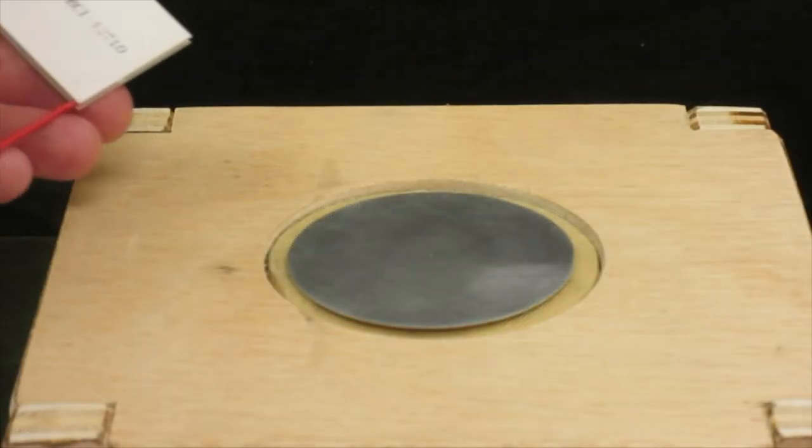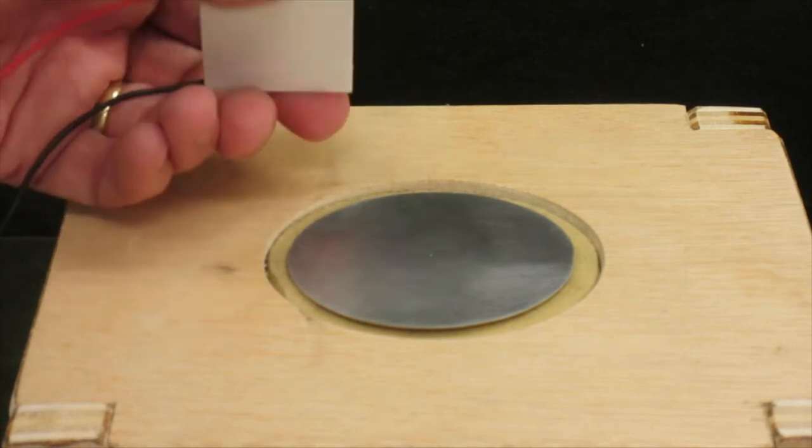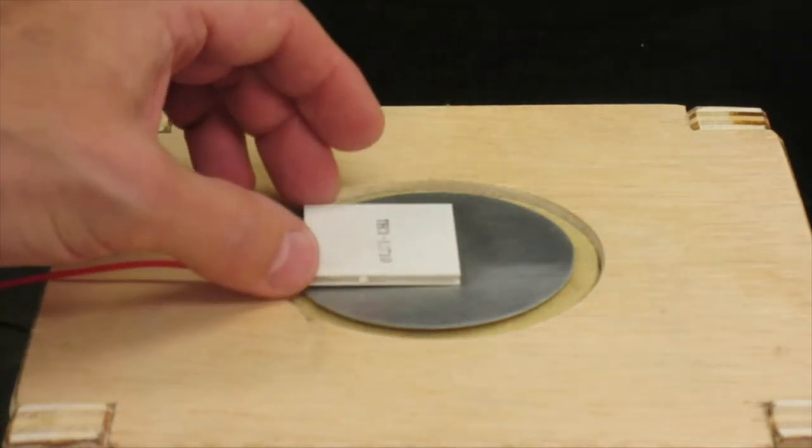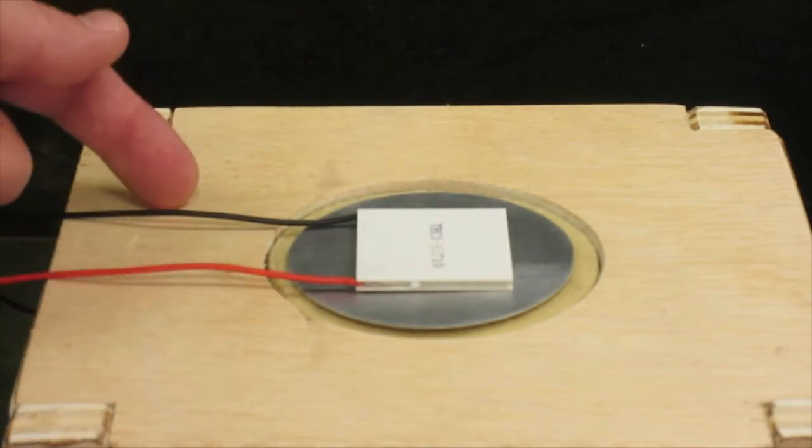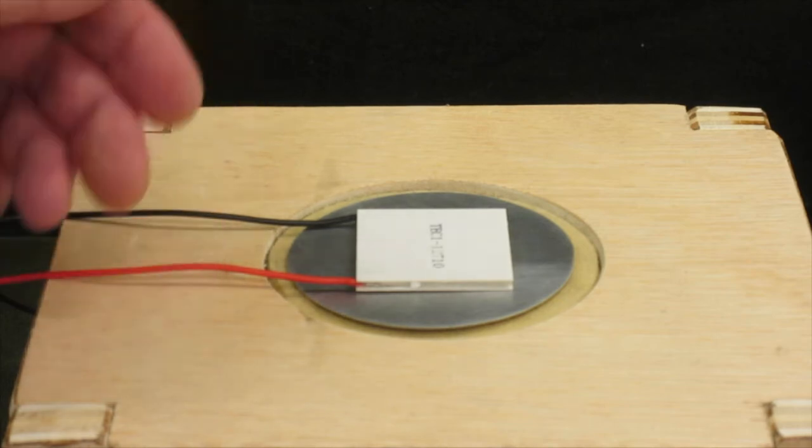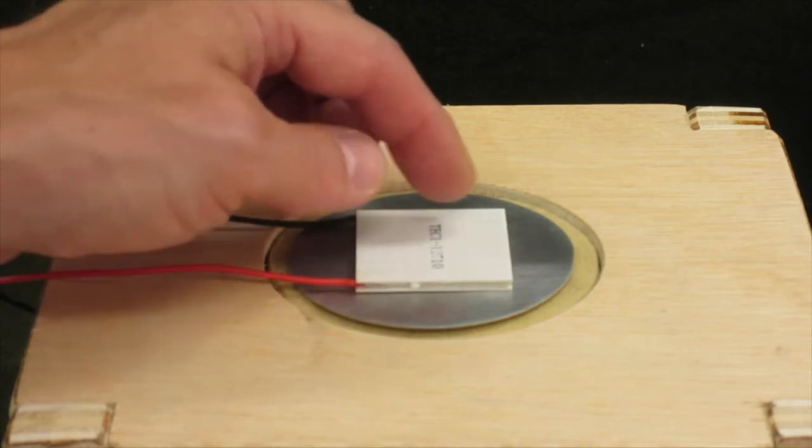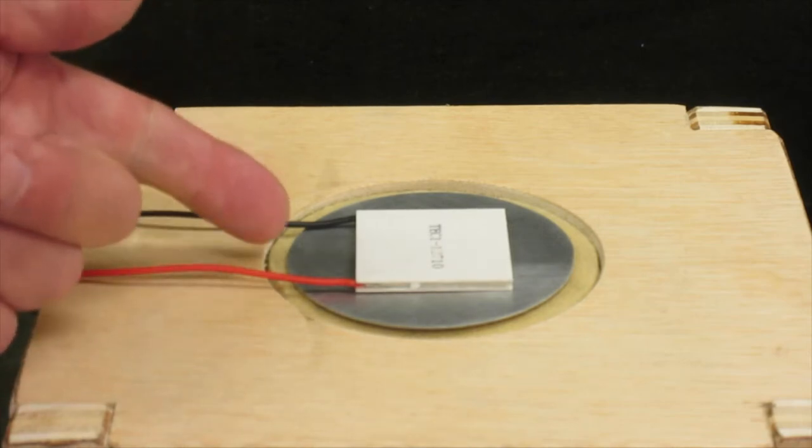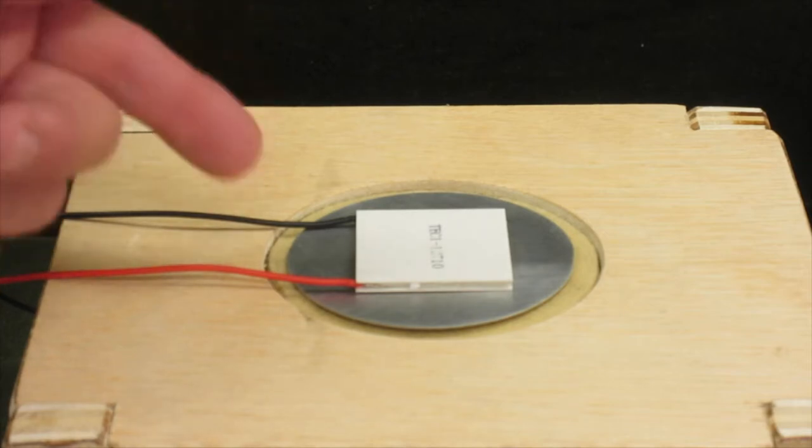You may be wondering what one of these thermoelectric units looks like. This is one that is just like the ones that are underneath this 3-inch diameter aluminum plate. These are 40 millimeters by 40 millimeters square, and they just take two leads, one positive, one negative, and the leads are connected to a power supply that allows them to draw about 8 amperes. This device sits right underneath this plate, and in our tests, we were able to get a temperature of minus 30 degrees centigrade, and that was achieved in well under 5 minutes after turning the device on.